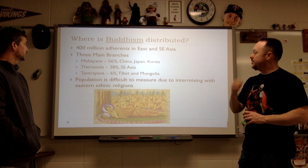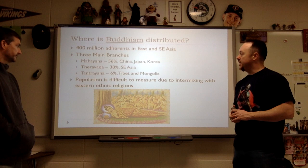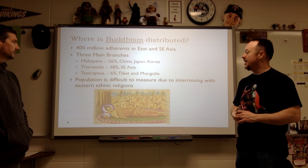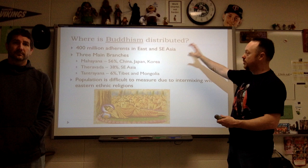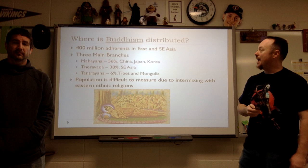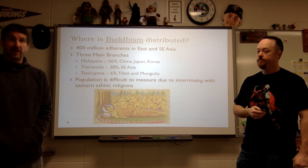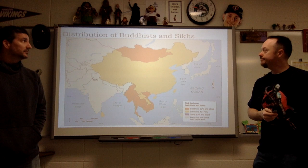Where is Buddhism? Our last of the three major universalizing religions — there are about 400 million adherents, specifically in East and Southeast Asia. There are three main branches. It's really difficult to measure Buddhism because it works well alongside other religions. Someone may have an ethnic religion they adhere to but also practice Buddhism as well — they might report as Taoist when they actually practice Buddhism too. Because it's a non-exclusive religion, measuring its followers is very difficult.